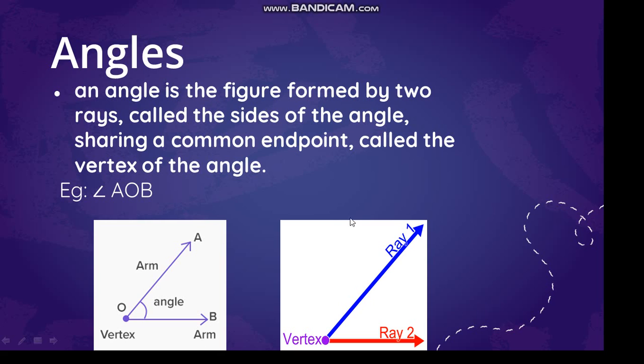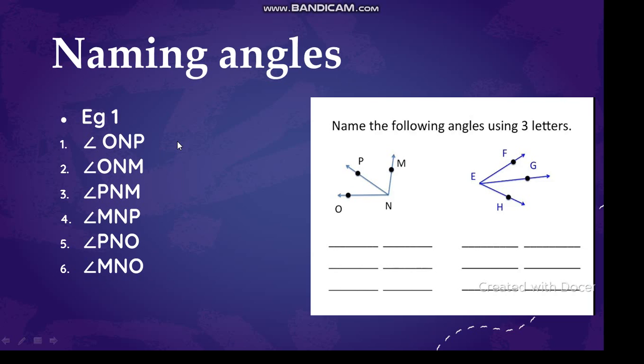Now how to name an angle? So see children, you can name an angle using three letters or one letter. So here in this example I have named the angles using three letters. So as you can see, the first example, angle ONP. The vertex will always come in the middle, okay?